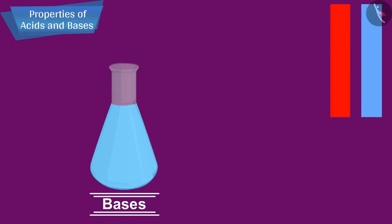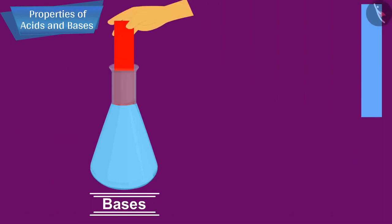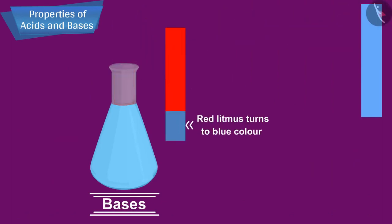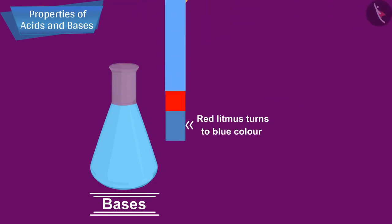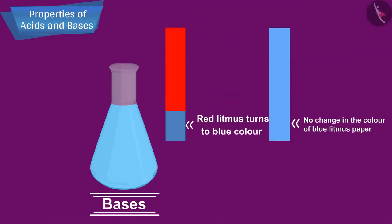Bases, which are bitter in taste, change red litmus to blue colour, and there is no change in the colour of blue litmus paper.